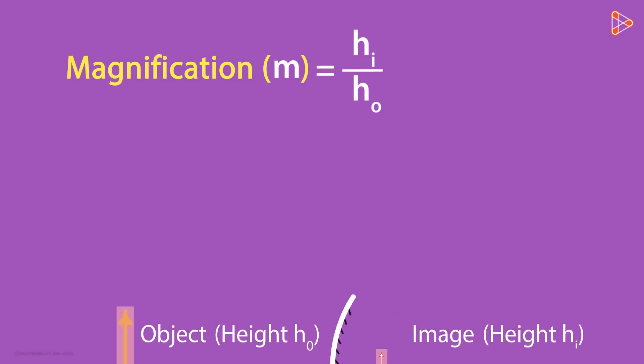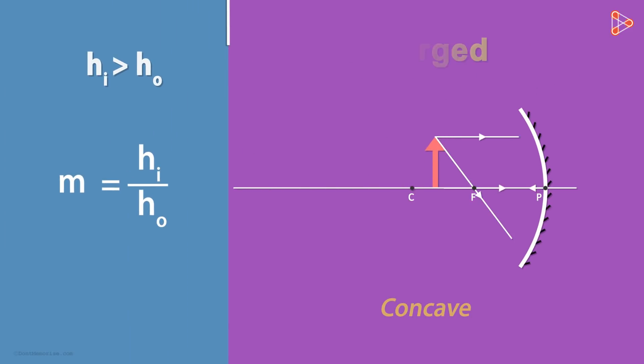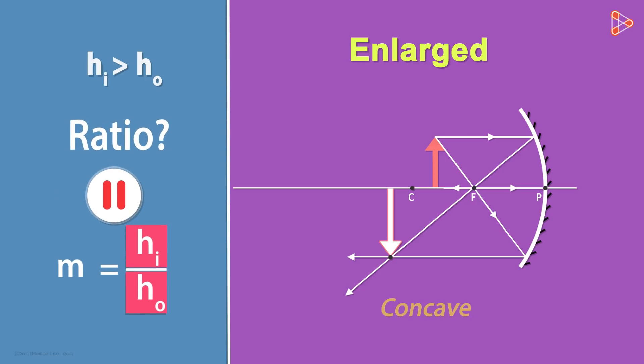Let's do a bit of math now. Suppose the height of the image is greater than the height of the object. This means that the image is enlarged. Now answer this question: if the term in the numerator is greater than the term in the denominator, then the ratio will be? Yes, their ratio will be greater than 1.